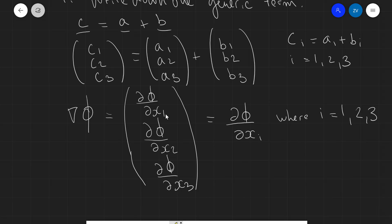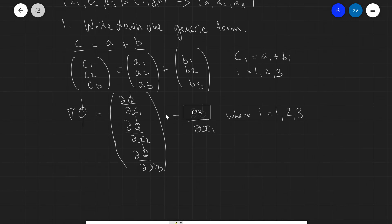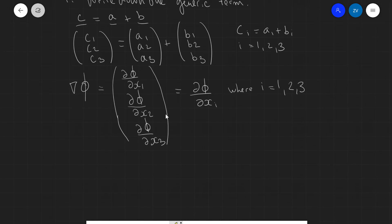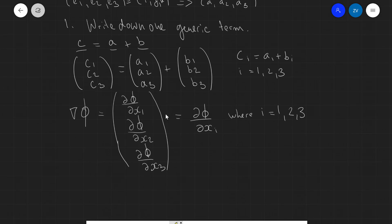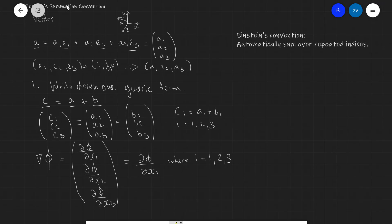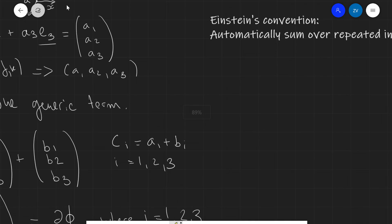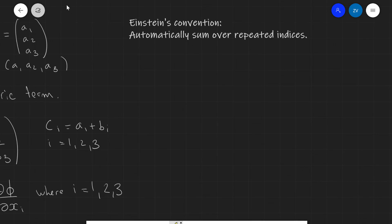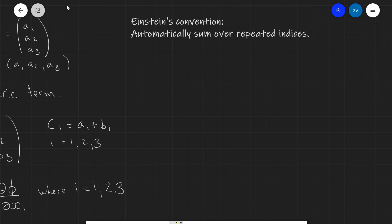Now, Einstein was an incredibly efficient man in his mathematics and he came up with the following convention. Now, what is the convention that Einstein actually came up with? That is to automatically sum over any repeated index. So, automatically sum over repeated indices.